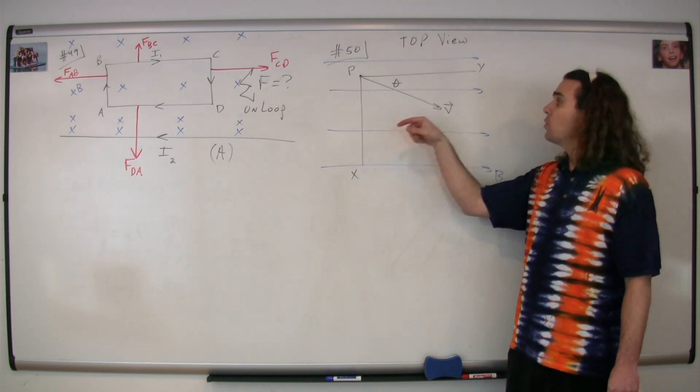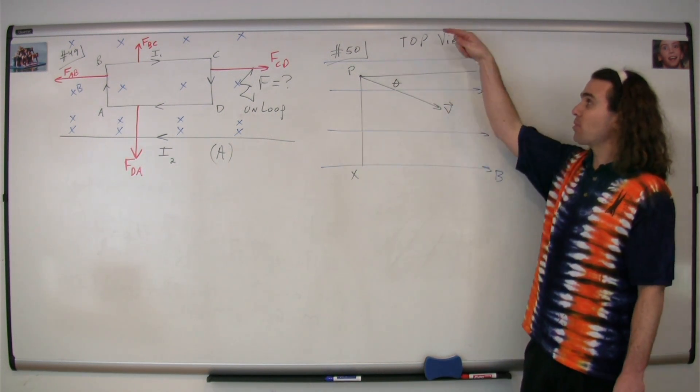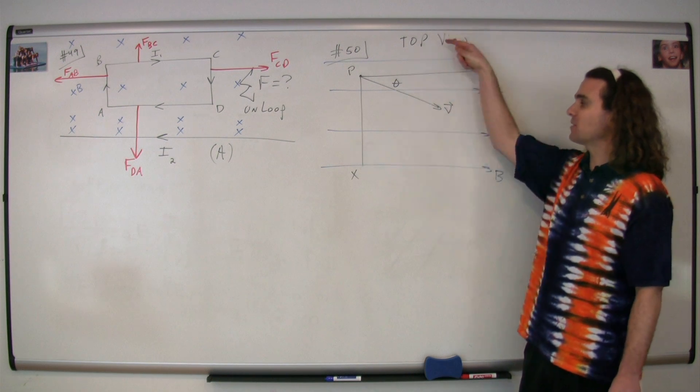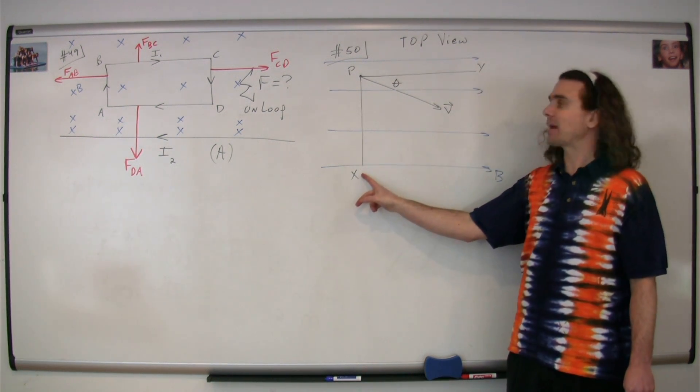Which is the negative x direction, which means that this proton is actually going to be moving in a circle because this force is actually going to be inward.